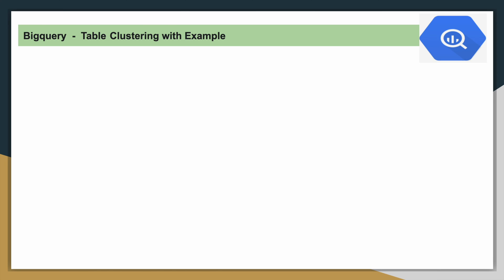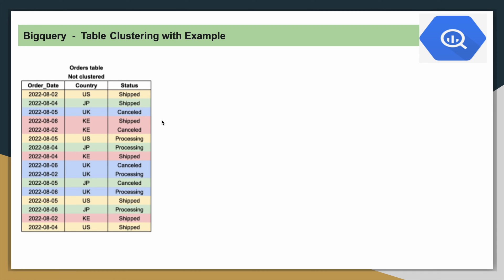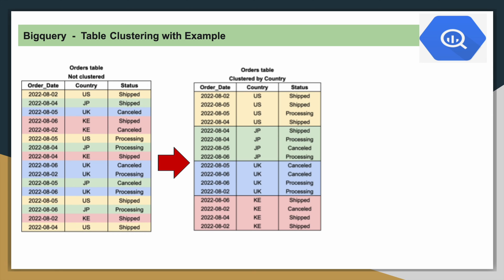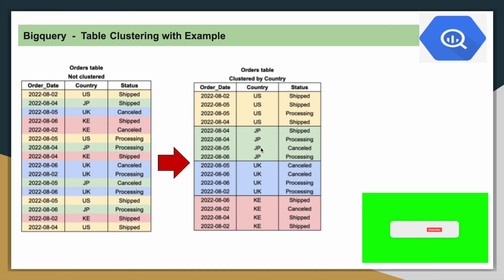Let's see a pictorial example of how table clustering helps improve performance and reduce query cost. This is a table with as-is data - it is not clustered at all, the data is stored as is with no sorting. Now if you cluster this table based on the country column, BigQuery will sort the data based on the country code. This is a pre-sorting mechanism.